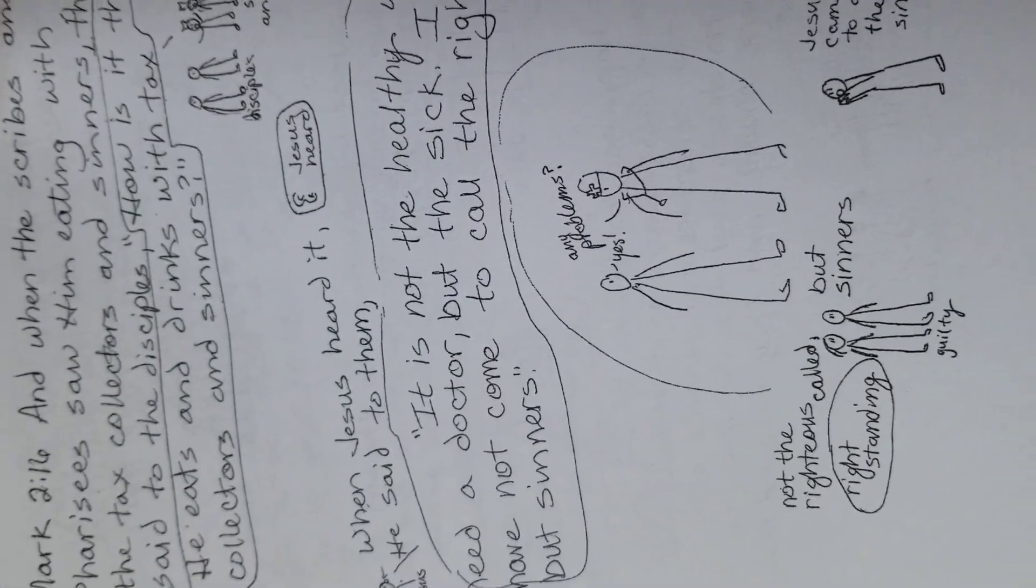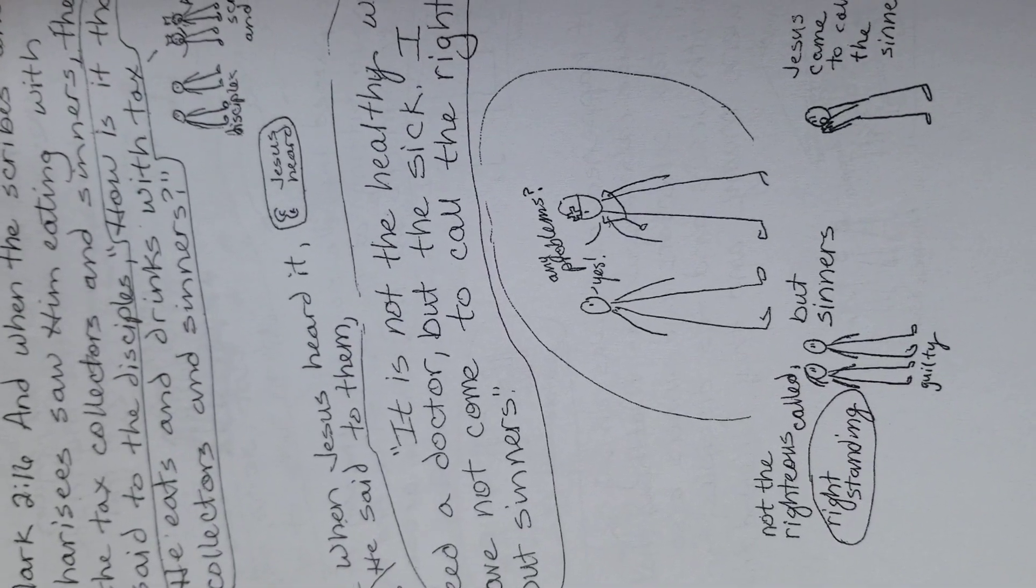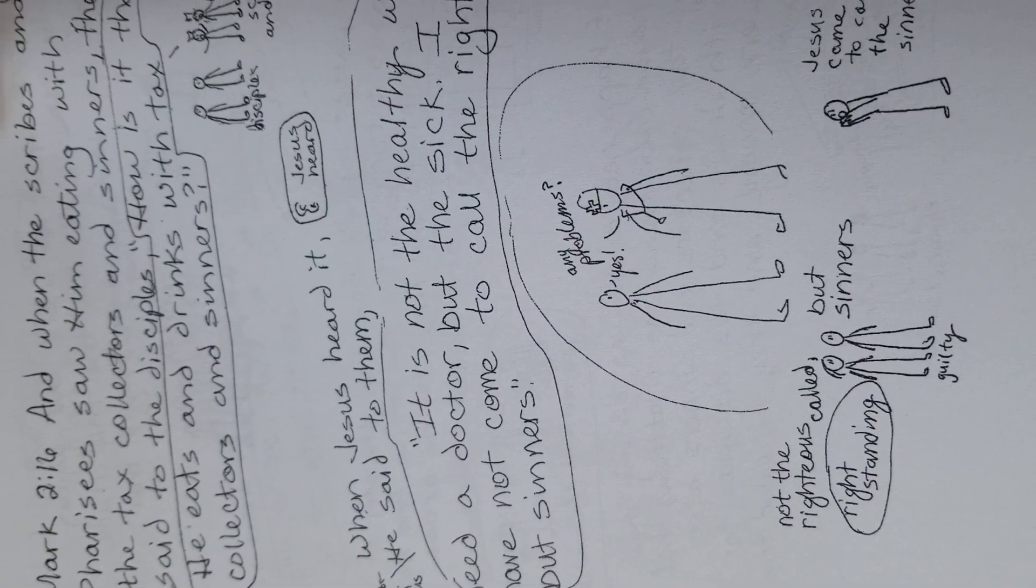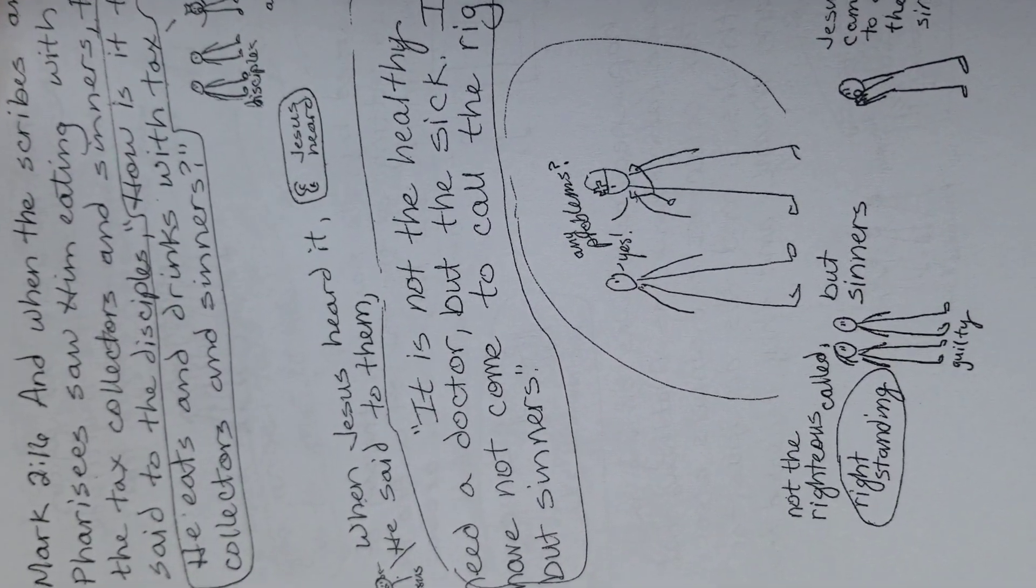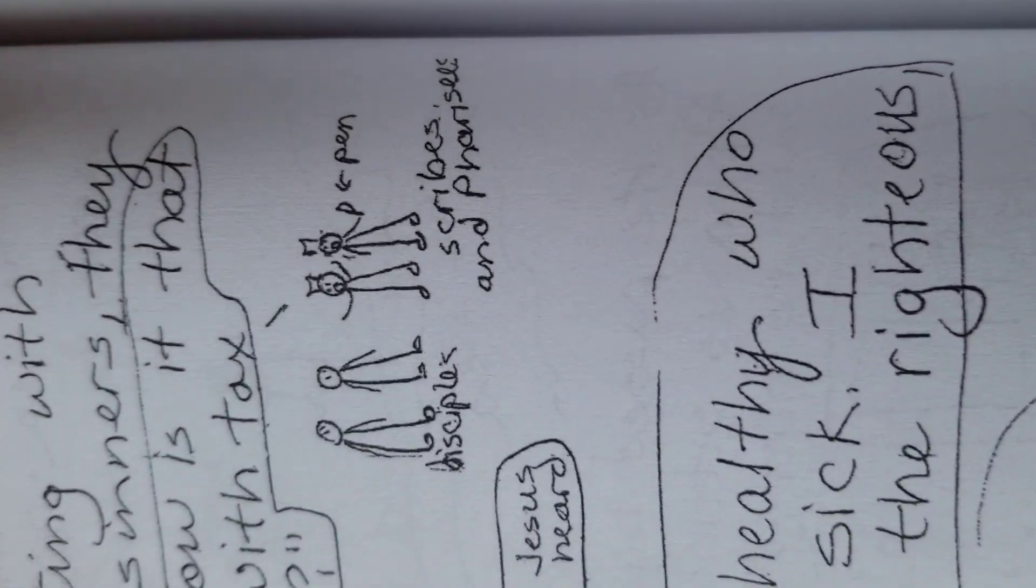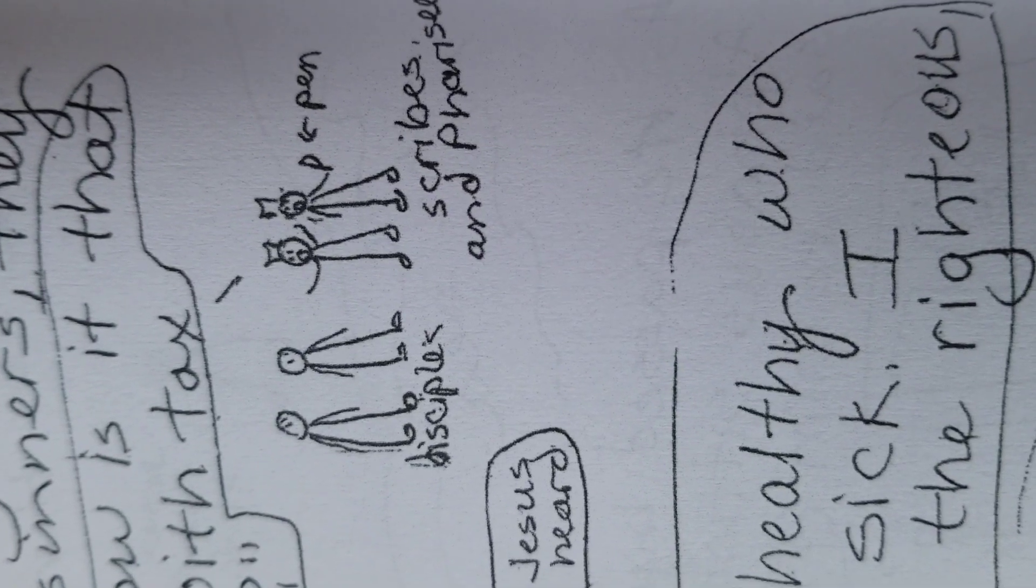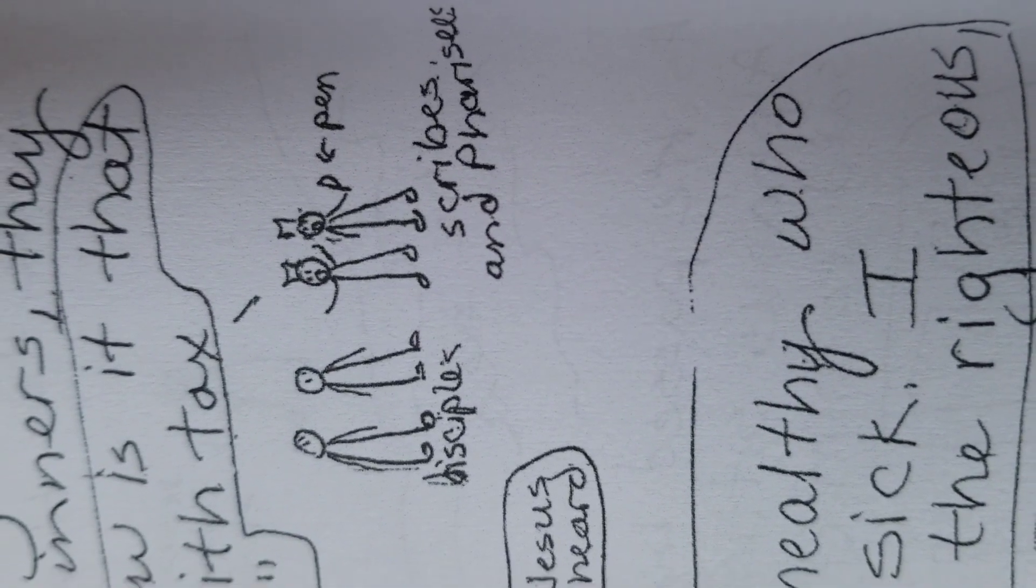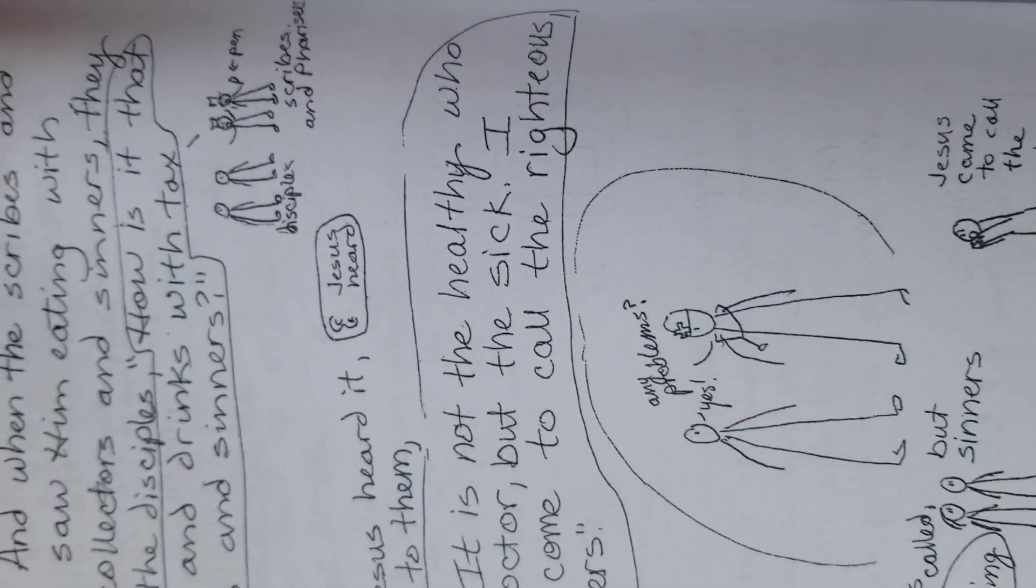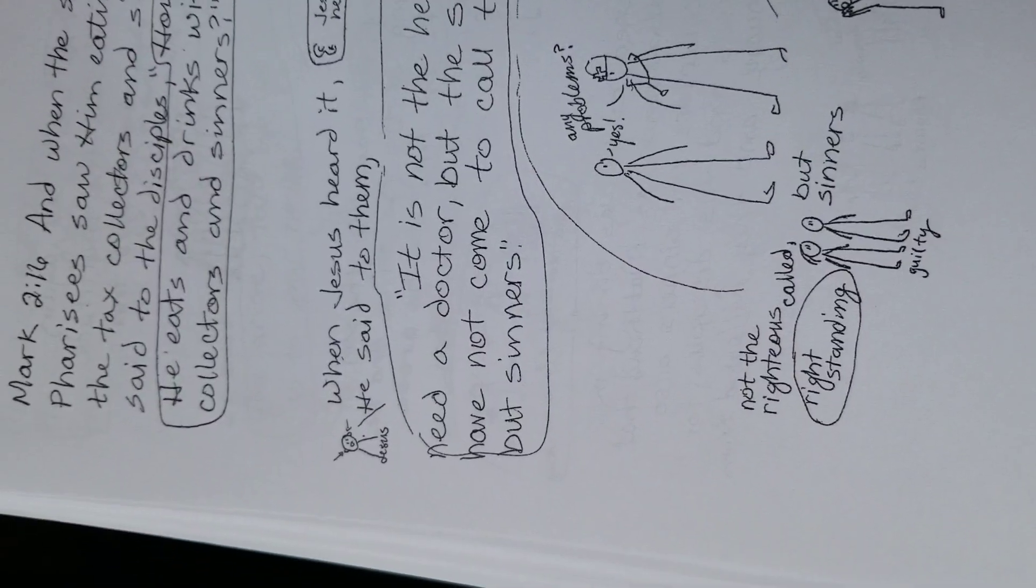And when the scribes and Pharisees saw him eating with the tax collectors and sinners, they said to the disciples, how is it that he eats and drinks with tax collectors and sinners? Scribes and Pharisees, religious people, leaders. A scribe writes things down, I believe. So I put a little pen there. Maybe a lawyer. How can he eat with sinners, these terrible people?